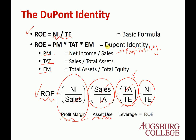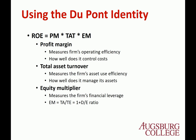That's the meaning of the DuPont identity. DuPont identity is the rule made by the guy named DuPont. Basically it says there are three components — profit margin, total asset turnover, and equity multiplier — and controlling the cost, managing the asset, and the financial leverage are three factors that may actually change the profitability of the firm.